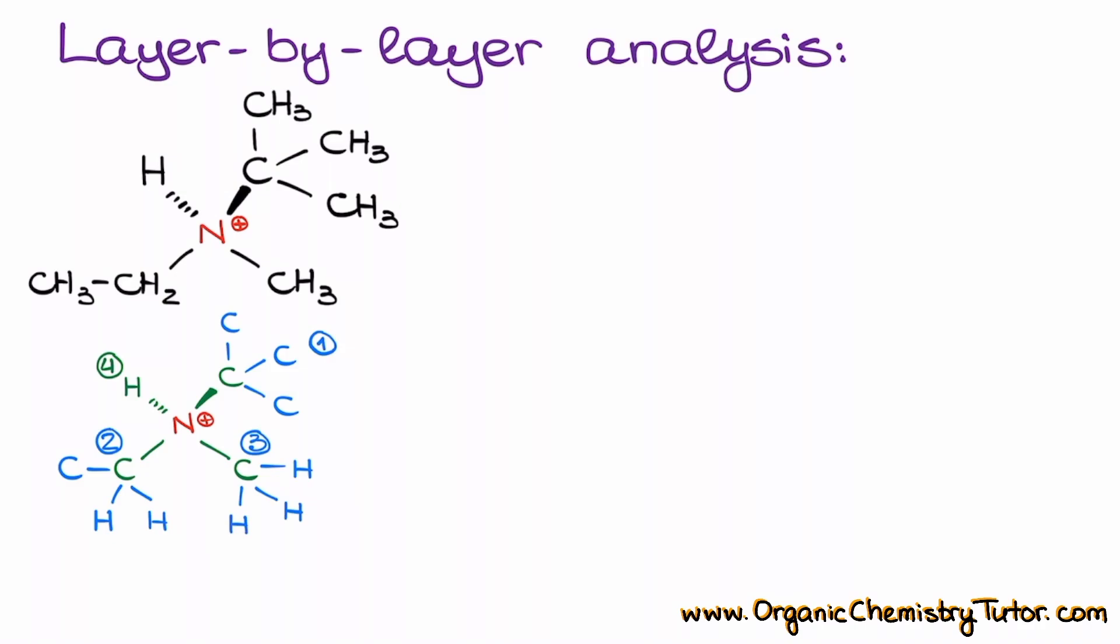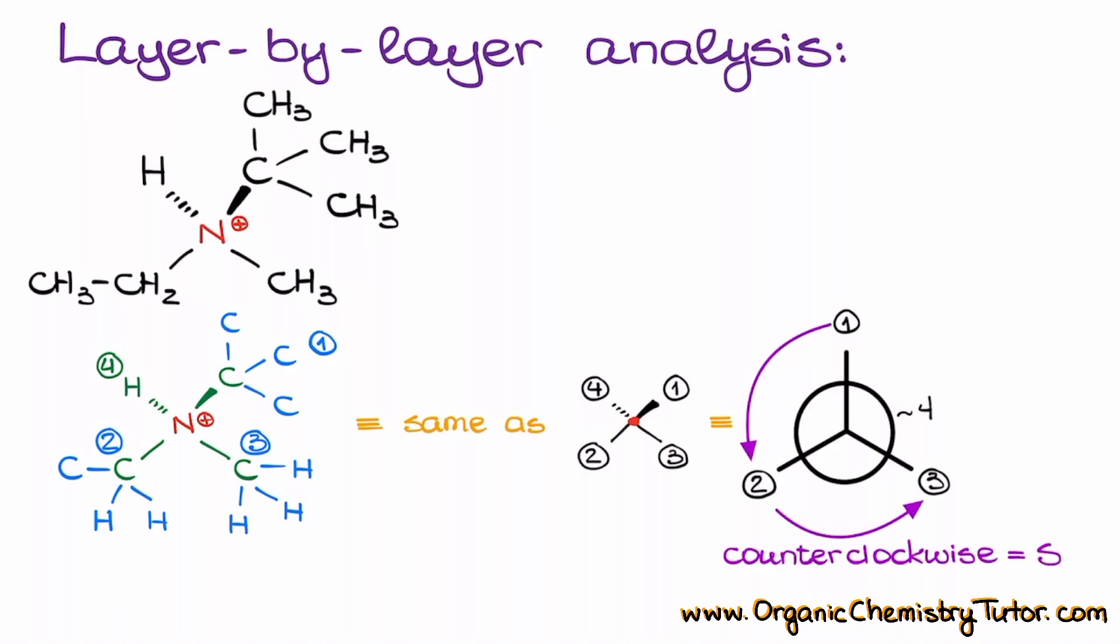So at this point, we can go ahead and assign the stereodescriptor, because our stereocenter looks like this, where the lowest priority is looking away. It's on the dash, it's looking away from the observer, which means that we don't need to move the stereocenter in space in any way or form. We can assign our stereodescriptor as is. And if I construct my Newman projection, I will have this picture in which I can clearly see that my priorities follow the counterclockwise pattern, which means that this is an S stereodescriptor.